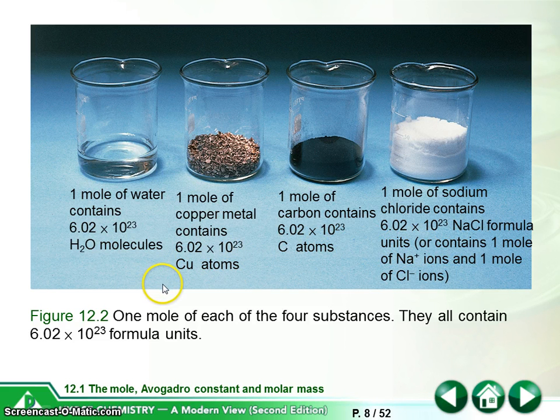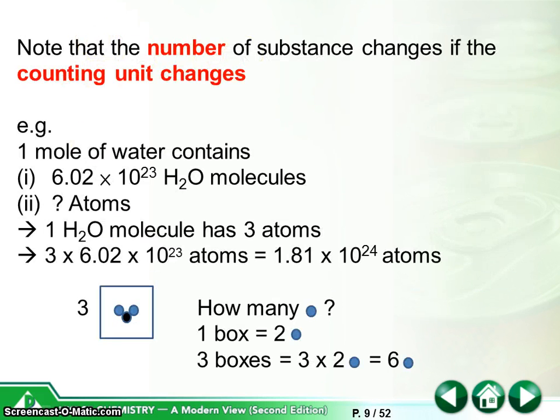So now it comes to a more difficult question. You need to know that the number of substances changes if the counting unit changes. What is a counting unit? Here, molecules is a counting unit. We count the substances one by one by the molecule. So we need to count one H2O as one. So that's where we have 6.02 times 10 to the power 23 H2O molecules. But how about the atoms? When we change the counting unit to atoms, then we need to change the number again because one H2O molecule has three atoms. So actually we need to multiply 3 to the 6.02 times 10 to the power 23 atoms. That would be 1.81 times 10 to the power 24 atoms.